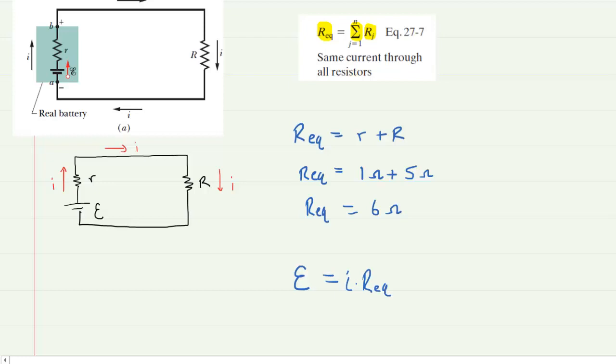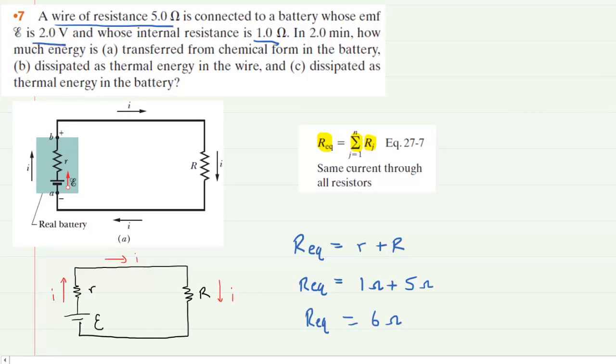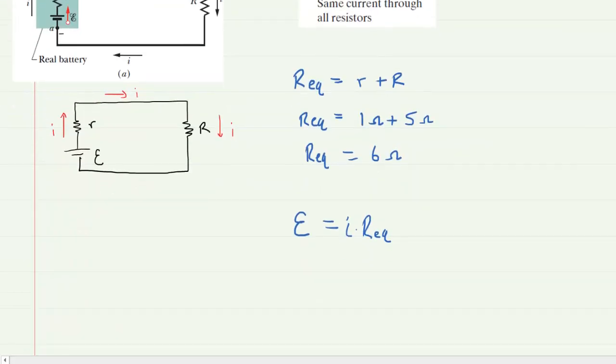Now the question does give us the EMF of the battery. It is 2 volts, so we can enter that into our equation. And then again the equivalent resistance of this circuit is 6 ohms as determined earlier. We can now divide both sides of the equation by the 6 ohms. And we can see that the total current coursing through this circuit is 1 third of an amp, so we can call that 0.333 amps. So this is the total amount of current.